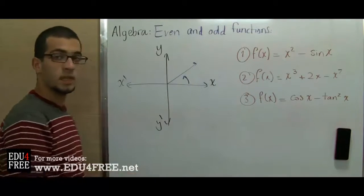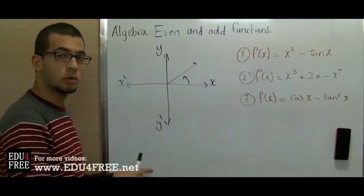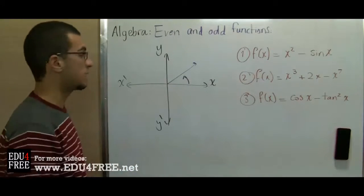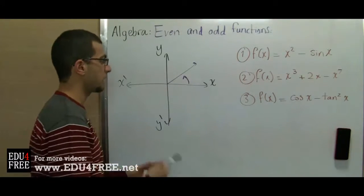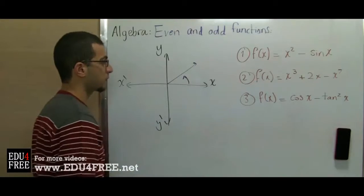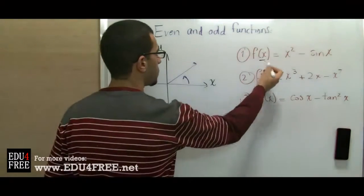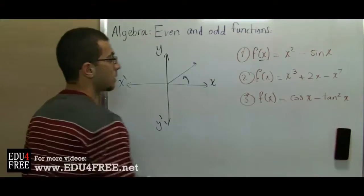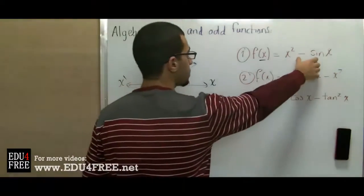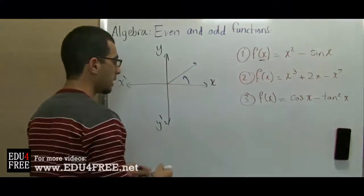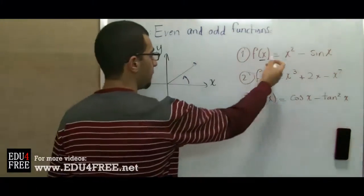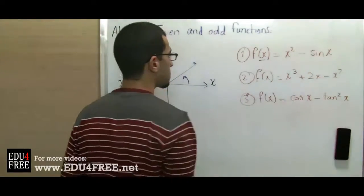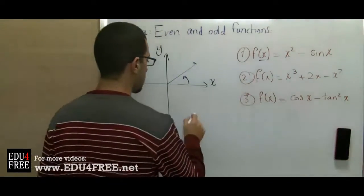As we have just mentioned, if we want to know whether a function is even or odd, we plug in the negative value. We have f(x) = x² - sin(x). So we plug in negative x.